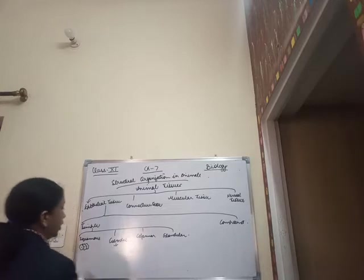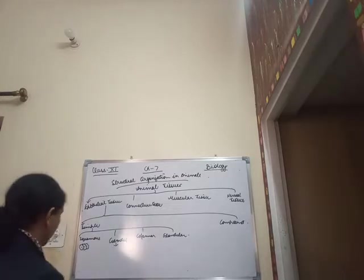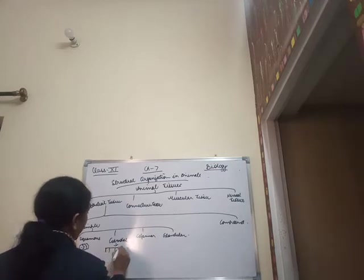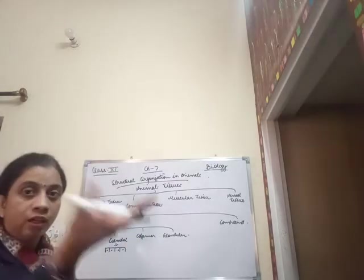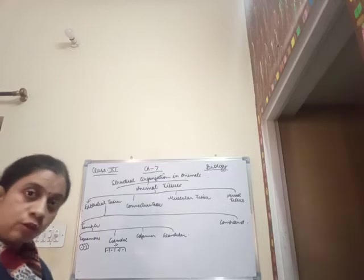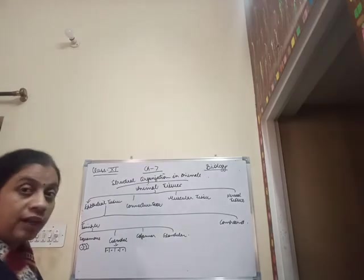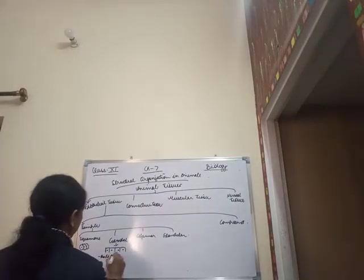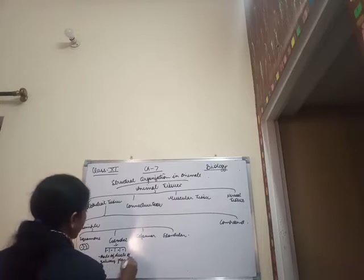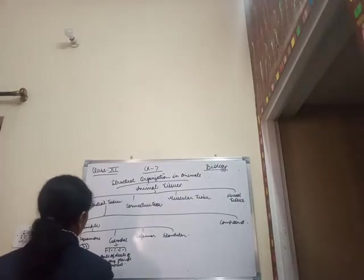Cuboidal epithelium cells appear as cuboids when a cross-section is taken. They are nucleated cells, present in the ducts of salivary glands and pancreas. Their basic function is secretion and absorption.